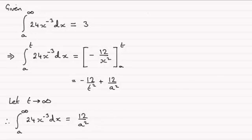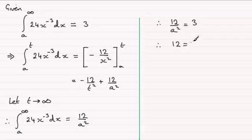Now we know that that integral is equal to 3. So therefore what we've got is 12 over a squared must equal 3. And rearranging this for a squared, if we multiply both sides by a squared we get 12 equals 3a squared.